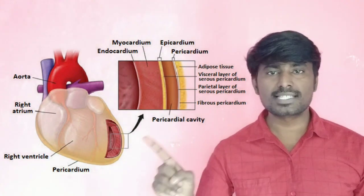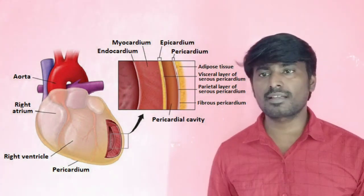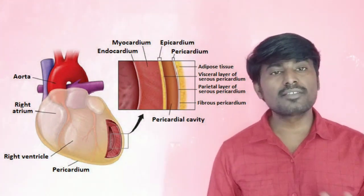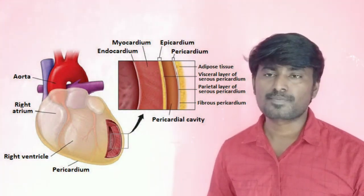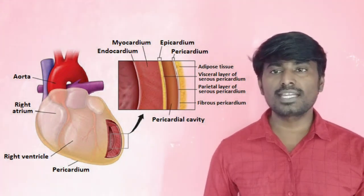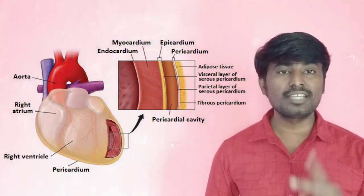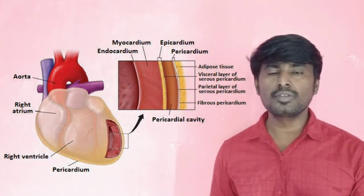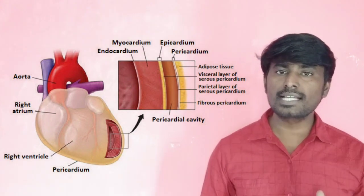Red muscles — this is called cardiac muscle. We can divide it into 3 different layers. We can break the 3 elements of the cardium.